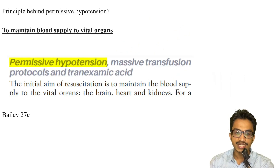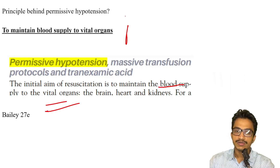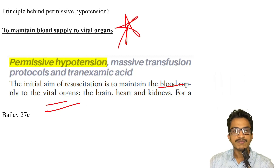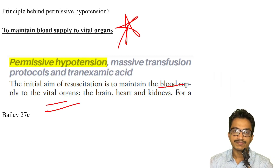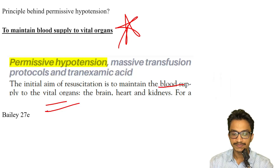The principle behind permissive hypertension is that the initial aim is to maintain the blood supply to the vital organs — not to reduce blood transfusions or anything else. It is basically to maintain blood supply to the vital organs.